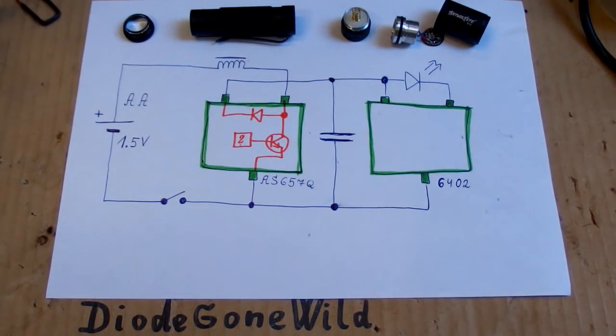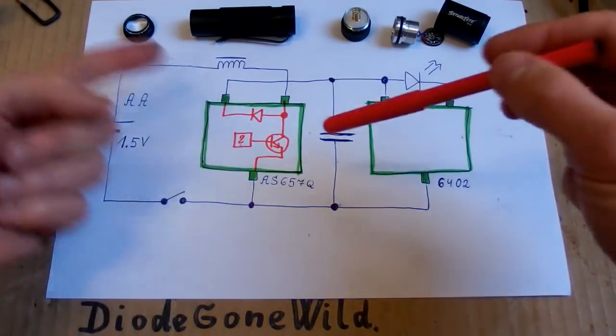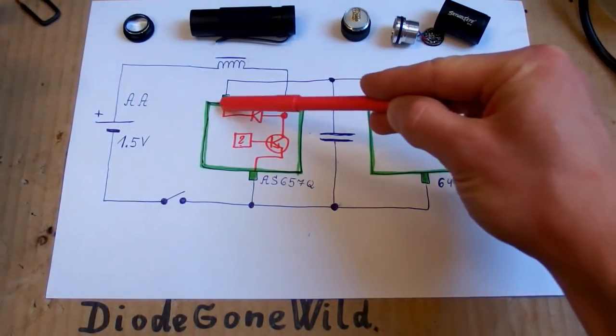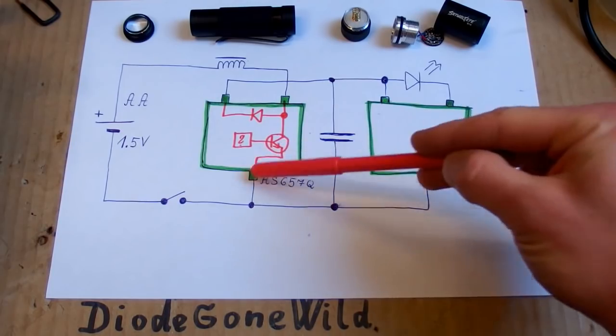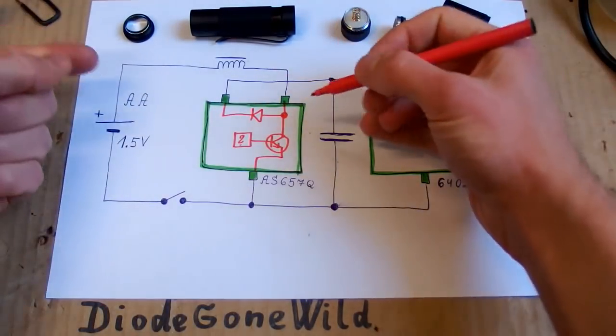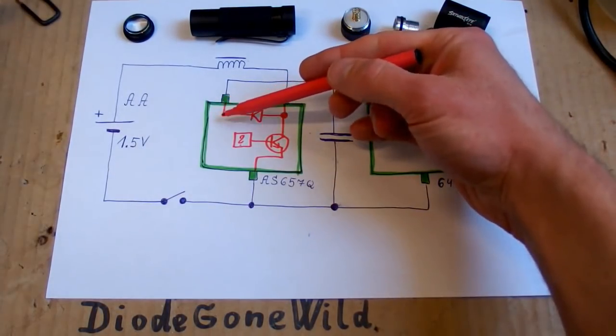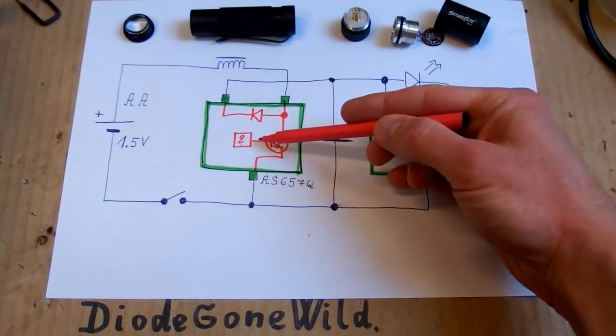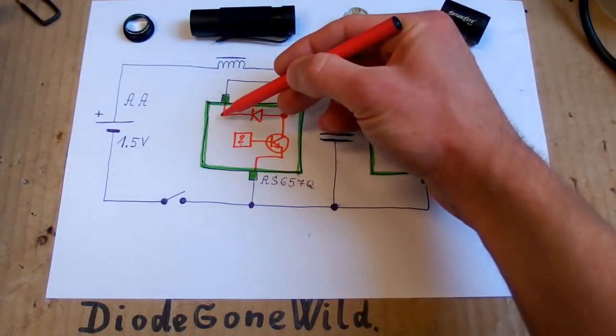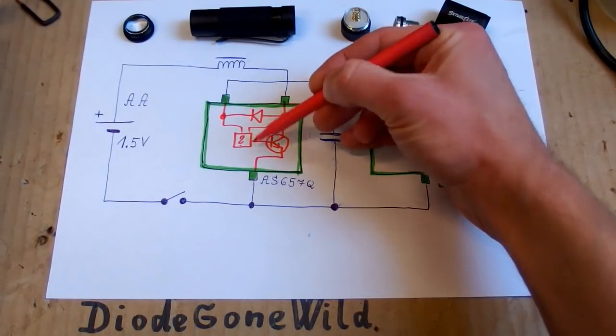I guess that the boost inverter chip contains something like this: there is the diode, the switching transistor, and some control circuitry which measures the voltage at the output maybe, and regulates the duty cycle here. And of course the control circuitry is also connected to the power.